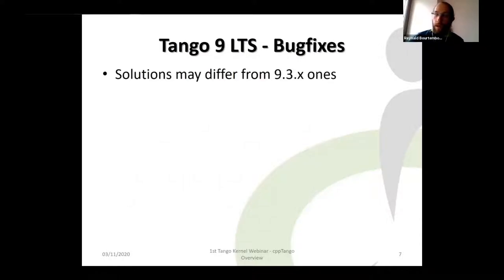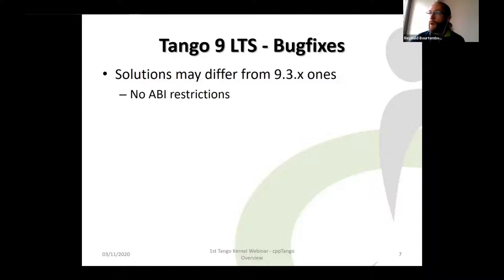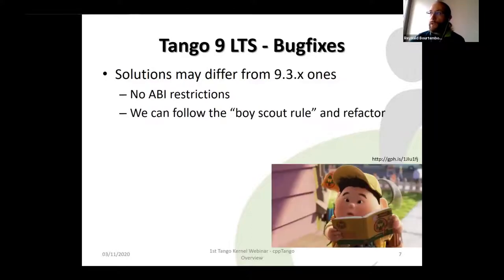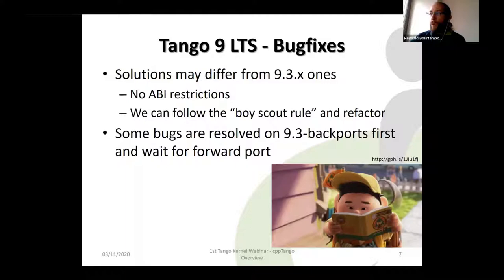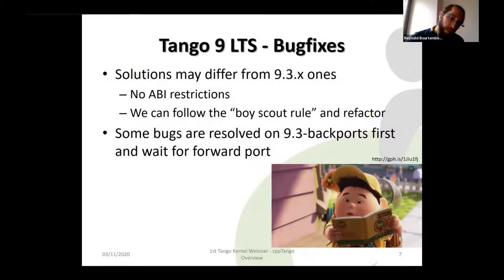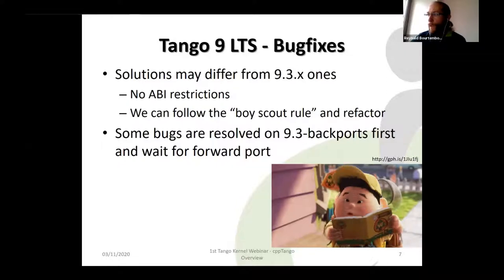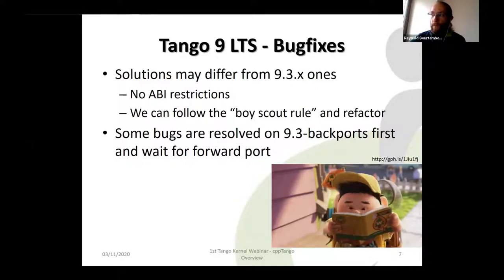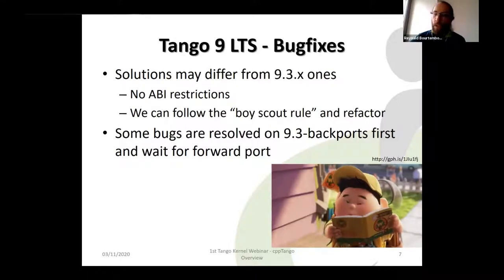About bug fixes on the 9 LTS branch: solutions may differ from 9.3 backport bug fix solutions because we have no ABI restrictions and more freedom. We can follow best code rules and refactor. Some bugs are solved on the 9.3 backport first and wait for forward porting, but in general we prefer pull requests on the Tango 9 LTS branch first, then backport to 9.3.